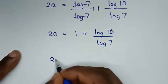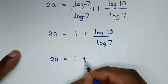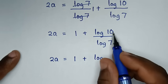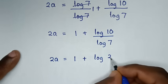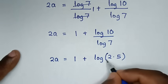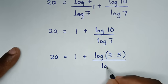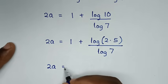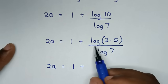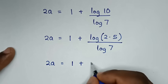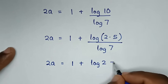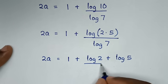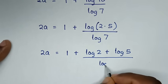Then 2A is equal to 1 plus, here log of 10 — to simplify further, we express log of 10 into prime numbers. So it will be 2A is equal to 1 plus log of 2 times 5, which gives log of 2 plus log of 5, over log of 7.